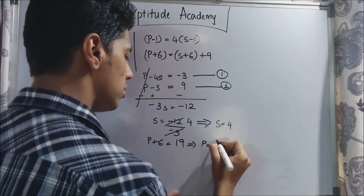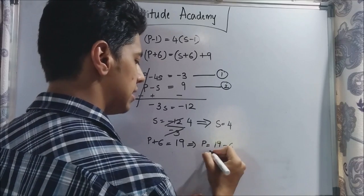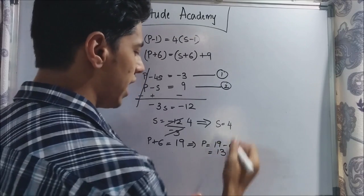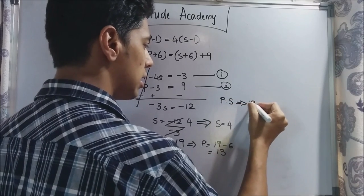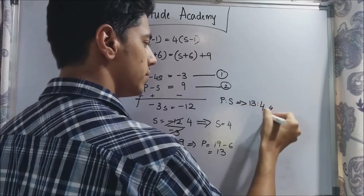P is equal to 19 minus 6. That is 13. So the ratio of the ages P is to S will be equal to 13 is to 4.